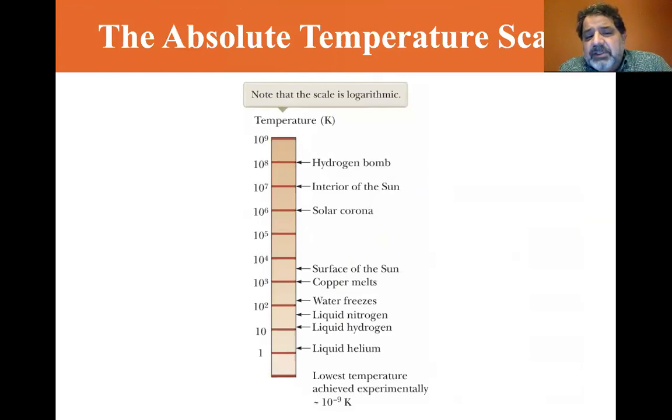So note that the scale here is logarithmic. So there's equal spacing of 10 to the X, you know, 10 to the 9th, 8th, 7th, 6th, all down to 10 to the zero, which is one. So we can, 10 to the 8th is a hydrogen bomb, 10 to the 7th is interior of the sun, you can go on, 10 to the 3 is copper melts, 10 to the, a little above 100 degrees, actually 273.15 water freezes. You have liquid nitrogen, liquid hydrogen, liquid helium, and the lowest temperature achieved experimentally is 10 to the minus 9 Kelvin. That's in the nano Kelvin range.